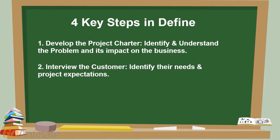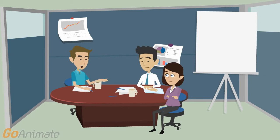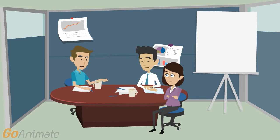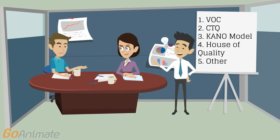Step 2: Interview the Customer — identify their needs and project expectations. Lean Six Sigma is customer-focused. A Lean Six Sigma project is only worth doing if the improvements made during the project increase the customer's satisfaction. During the Define Phase, interview the customer and have a face-to-face in order to identify what the customer wants to see as a result of the project and their expectations.